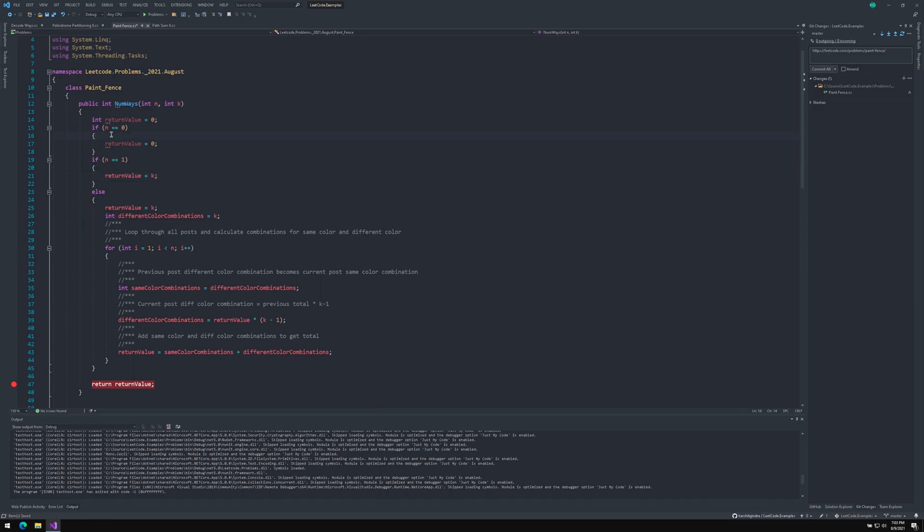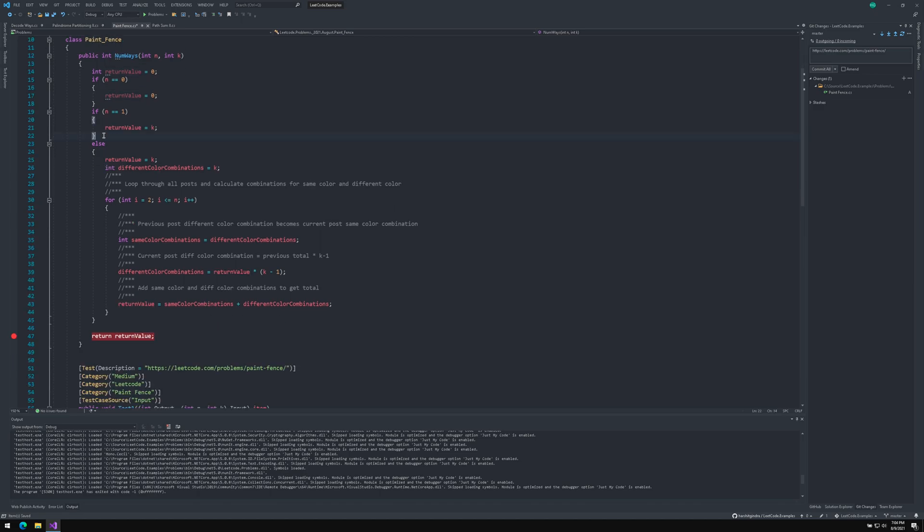We start with doing some basic validation. Like if the number of posts is equal to zero, then we cannot do any combinations. If the post is one, then we can do combinations equal to the number of colors available. If the validation rules pass, then we start our logic. We loop through all the posts that are given to us starting with the number two. As for number one, we don't need to do that. By default, we start with the total set to the number of colors available.